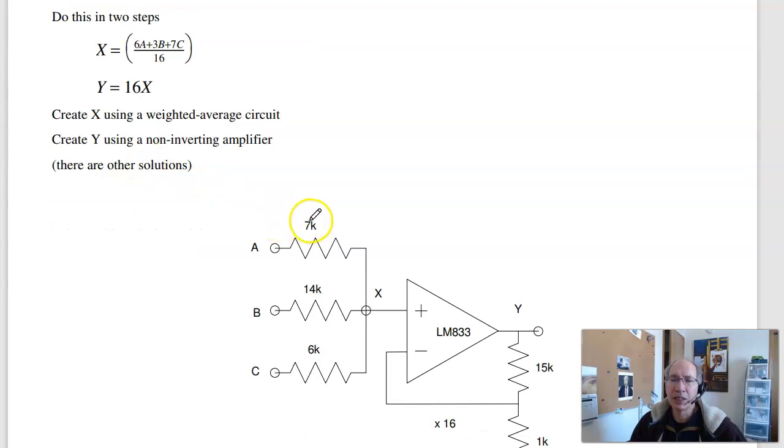For weighted average, it's pick a resistor. I chose 42k as my base resistance. That's the least common multiple of these three. The 42k divided by 6 is this value, 7k. 42k divided by 3 is the weighting on b. 42k divided by 7 is the weighting on c. So this will give the weighting of 6, 3, and 7. Weighted average.